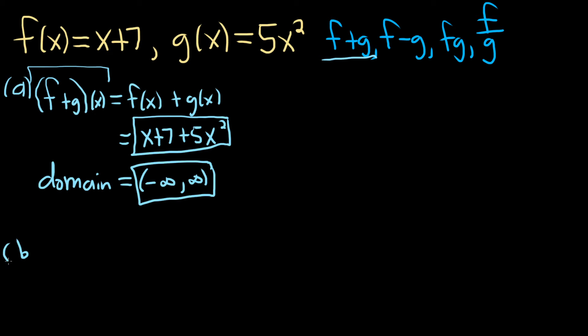Part b wants us to find f minus g. Same thing. It would be parentheses f minus g of x, and this is equal to f of x minus g of x. This is the formula for f minus g. Basically, you just subtract. So it would be x plus 7, minus 5x squared. And that's it. Pretty easy. So that would be f minus g.